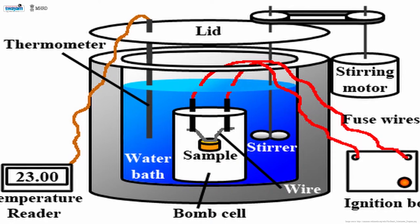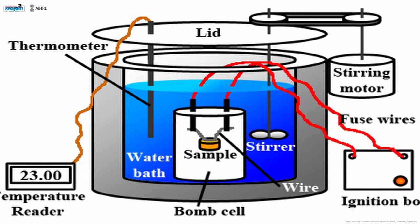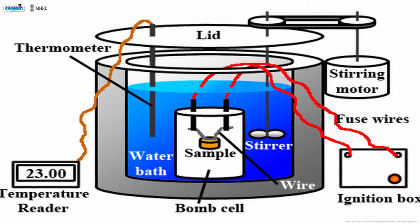This entire vessel is placed in a copper calorimeter containing a known amount of water. For measuring the calorific value, a known amount of biomass is placed in the bomb vessel.